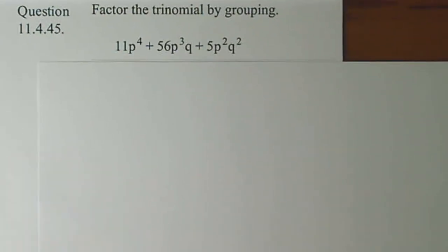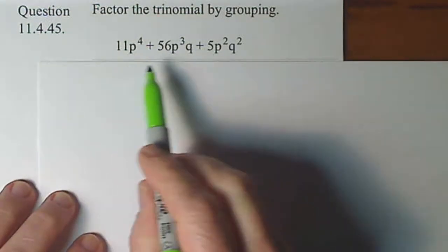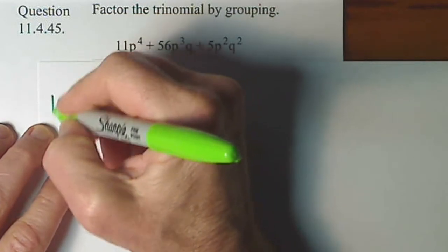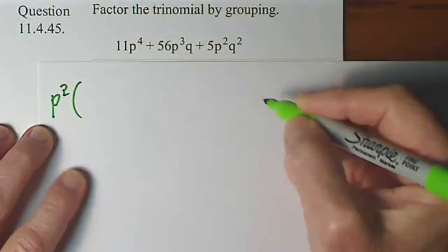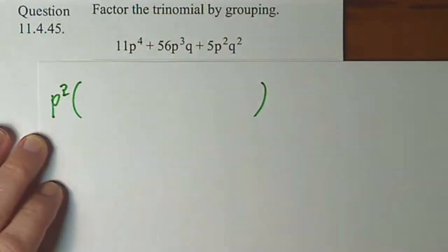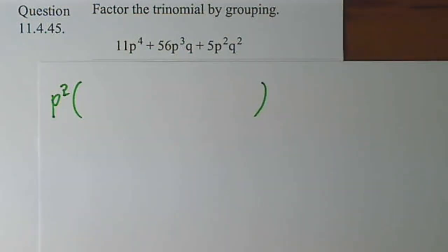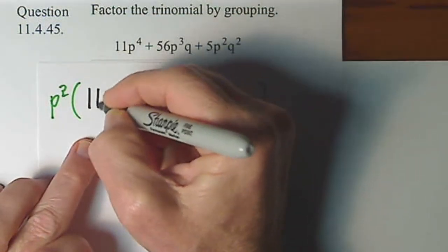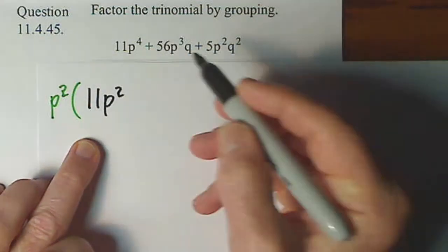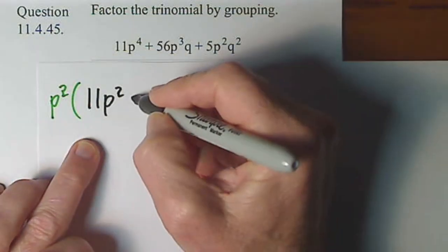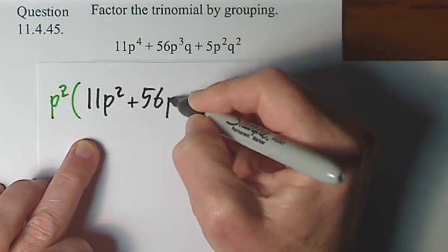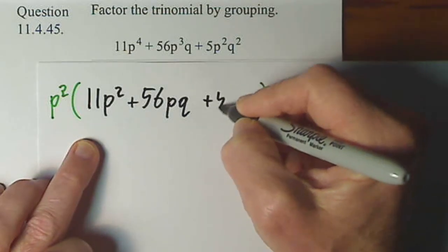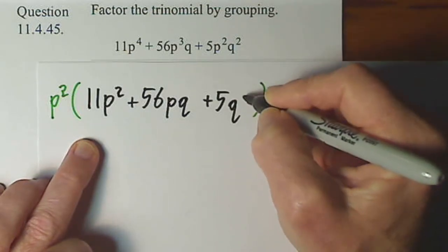Number one on the list is GCF. You have a GCF, you want to factor it out. If you look at each term, there's a P squared common to all three, so we're going to factor out P squared. When we factor P squared out of this first term, you're left with 11P². You factor it out of the second term, you're left with 56PQ. And you factor it out of the third term, you're left with plus 5Q².